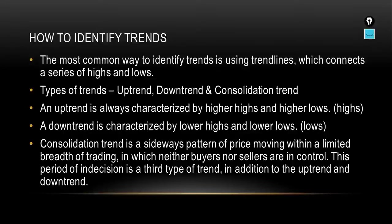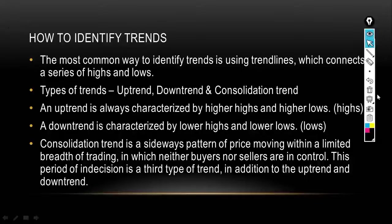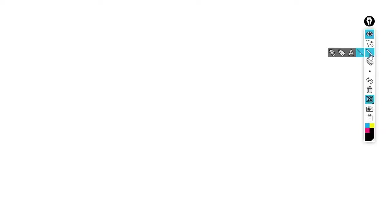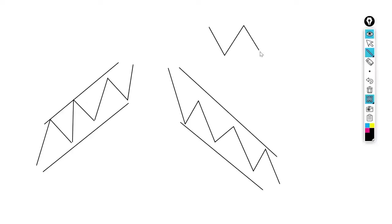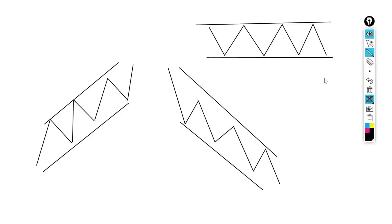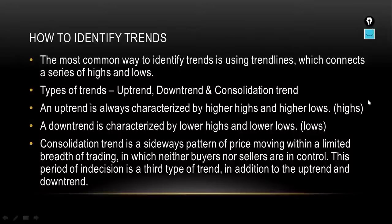How to identify trends: the most common way is using trend lines, which connect a series of highs and lows. There are three types of trends: uptrend, downtrend, and consolidation trend. An uptrend is characterized by higher highs and higher lows. In an uptrend, we focus on highs. A downtrend is characterized by lower highs and lower lows. And lastly, a consolidation trend is a sideways pattern where neither buyers nor sellers are in control. I'll show you practical examples and illustrations of each.